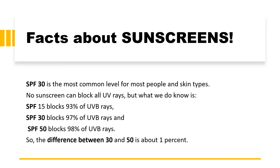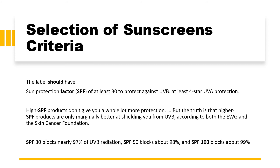When considering the choice of sunscreen, two things are very important: first is the SPF factor and second is the UVA star rating. No sunscreen can block all UV rays. SPF 15 blocks 93% of UV rays, SPF 30 blocks 97%, and SPF 50 blocks 98%. The difference between SPF 30 and SPF 50 is hardly 1%. It is recommended to use SPF 30 UVB block along with high star ratings. The label should have a sun protection factor of at least 30 to protect against UVB and at least 4-star UVA protection.